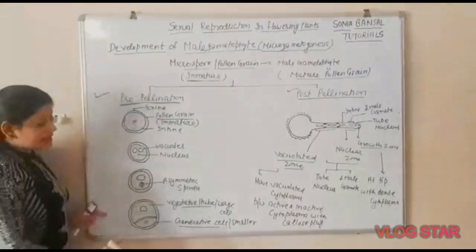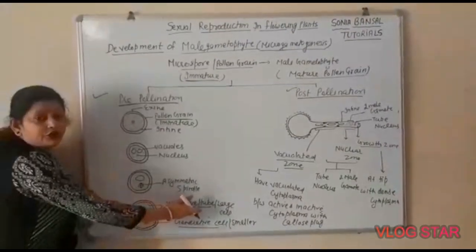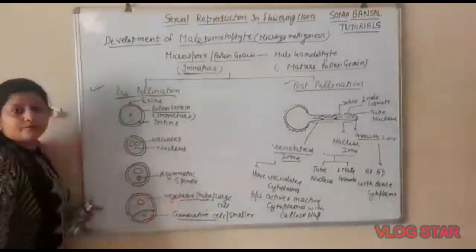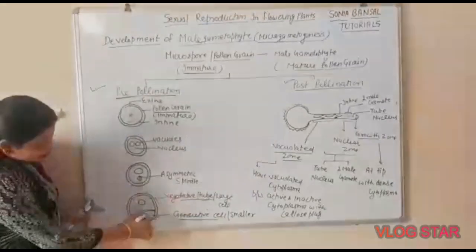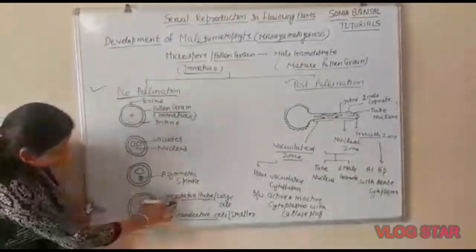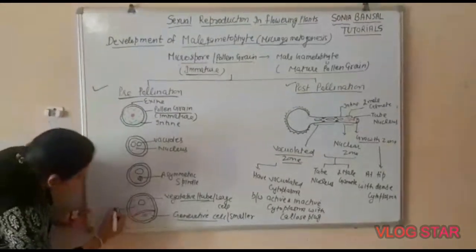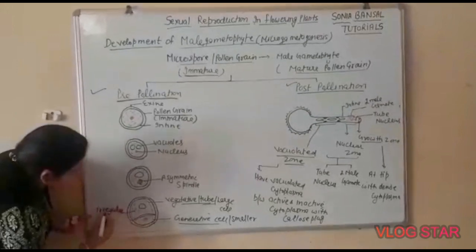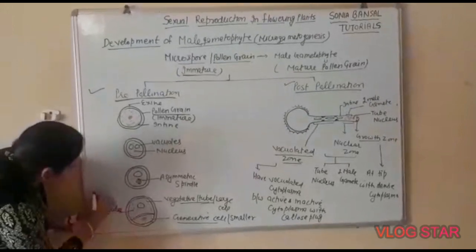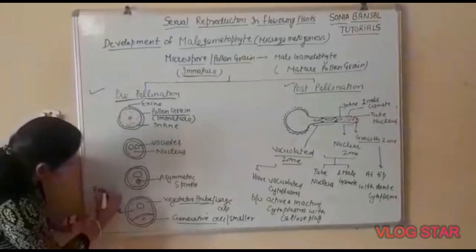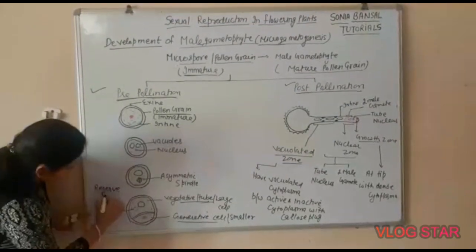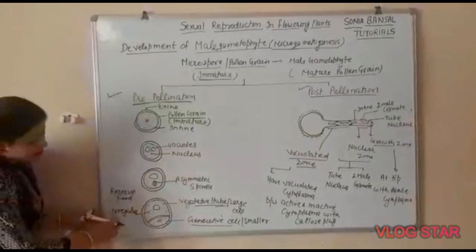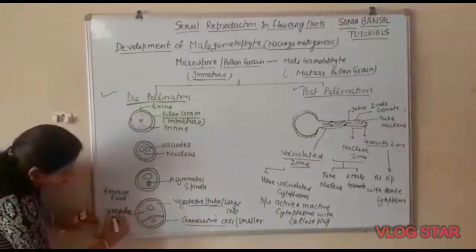The vegetative cell helps in the possession of the pollen tube, so it is also called the tube cell. Its size is larger, but the nucleus of the vegetative cell is in another shape. It contains an abundance of stored food material, and the nucleus is in an inactive state.